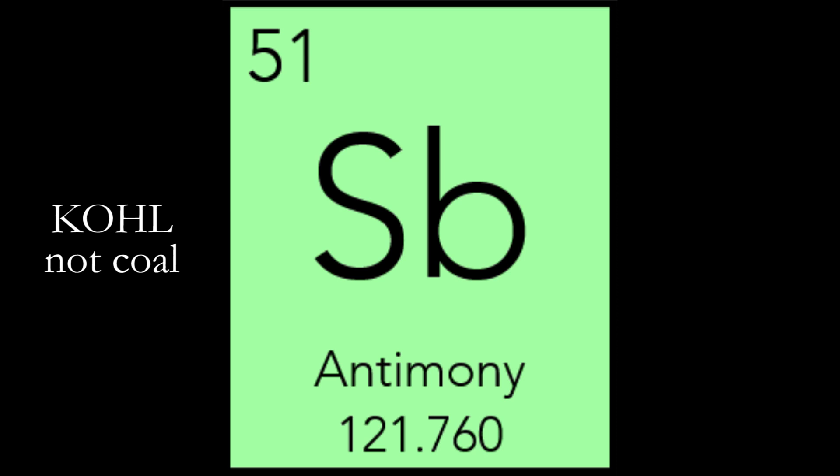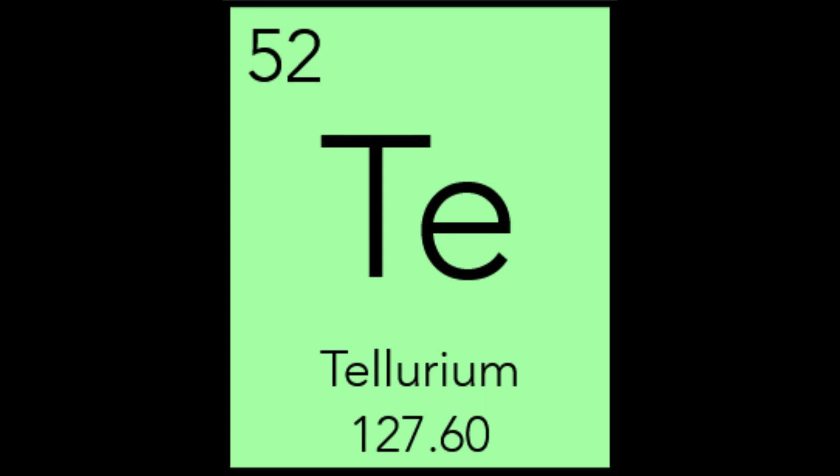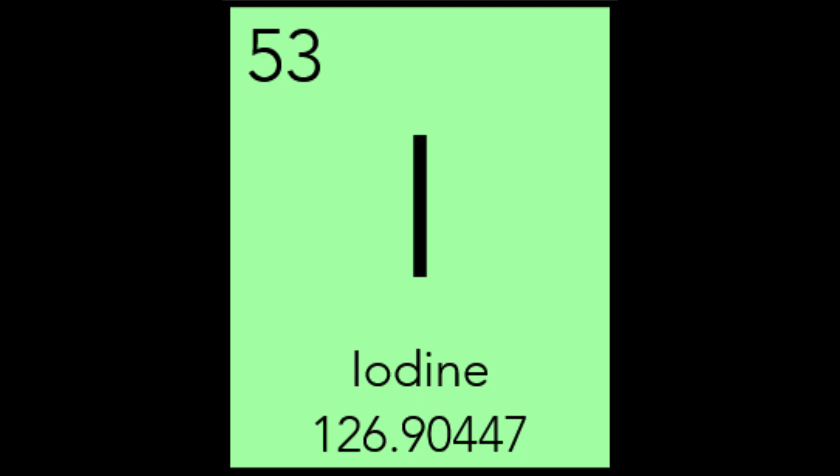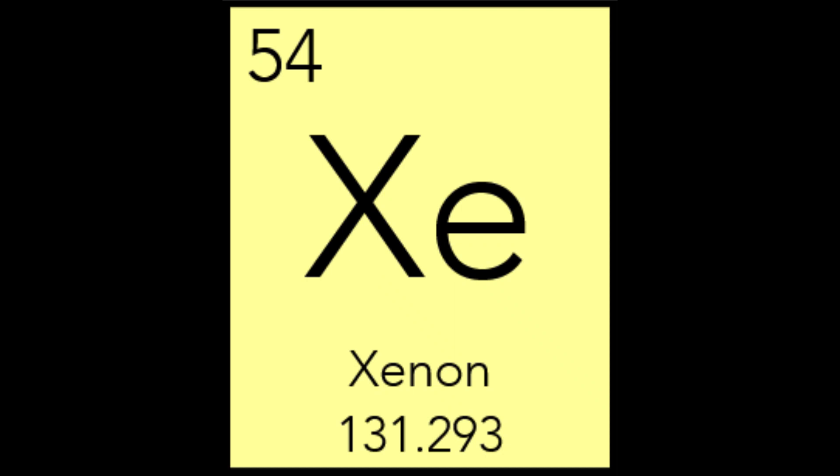Tellurium has a much simpler origin — it gets its name from the Latin tellus, which means earth. The discoverer temporarily called the element aurum paradoxum, meaning paradoxical gold. Tellurium, Te, is used in semiconductor applications and in important alloys of copper and steel. Iodine gets its name from the Greek iodes, which means violet, because of the color of iodine gas. Iodine is used mostly as a catalyst in many industrial processes and in making dyes, pigments, pharmaceuticals, and photography. Xenon gets its name from the Greek xenos, which means foreign or stranger — also where we get words like xenophobe. Xenon was the first noble gas to be synthesized and is used for camera flashes, movie projectors, and headlights in cars.